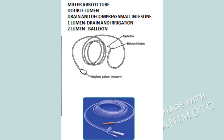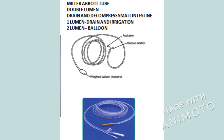The second type of intestinal tube is the Miller-Abbott tube. It is a two lumen tube — one lumen is used for decompression or removing the intestinal contents, and the second lumen is used for inflating the balloon with tungsten.